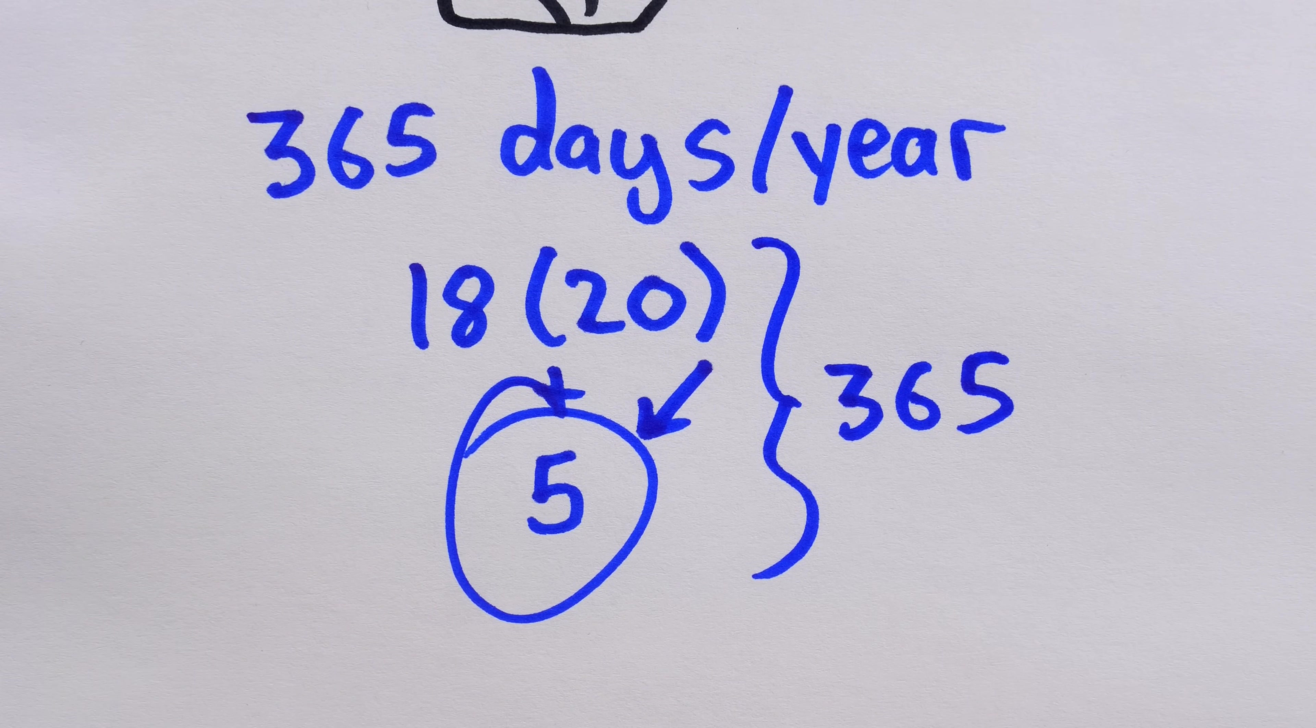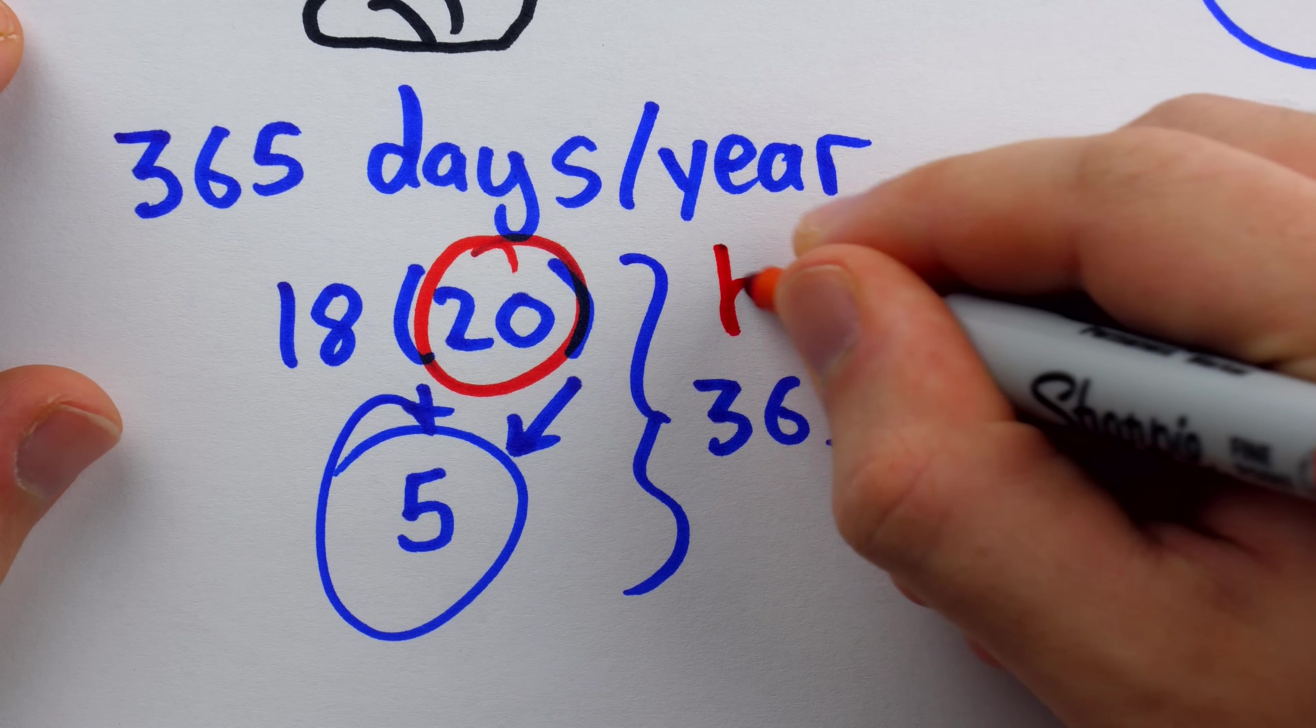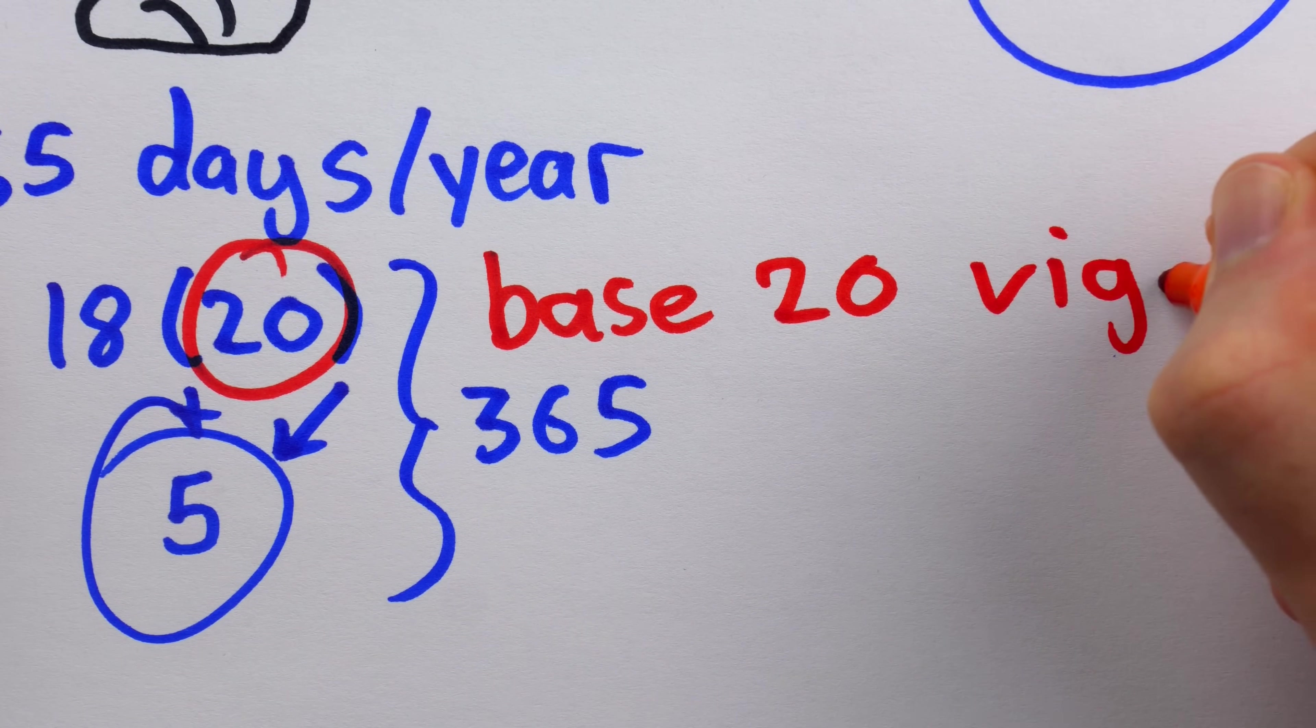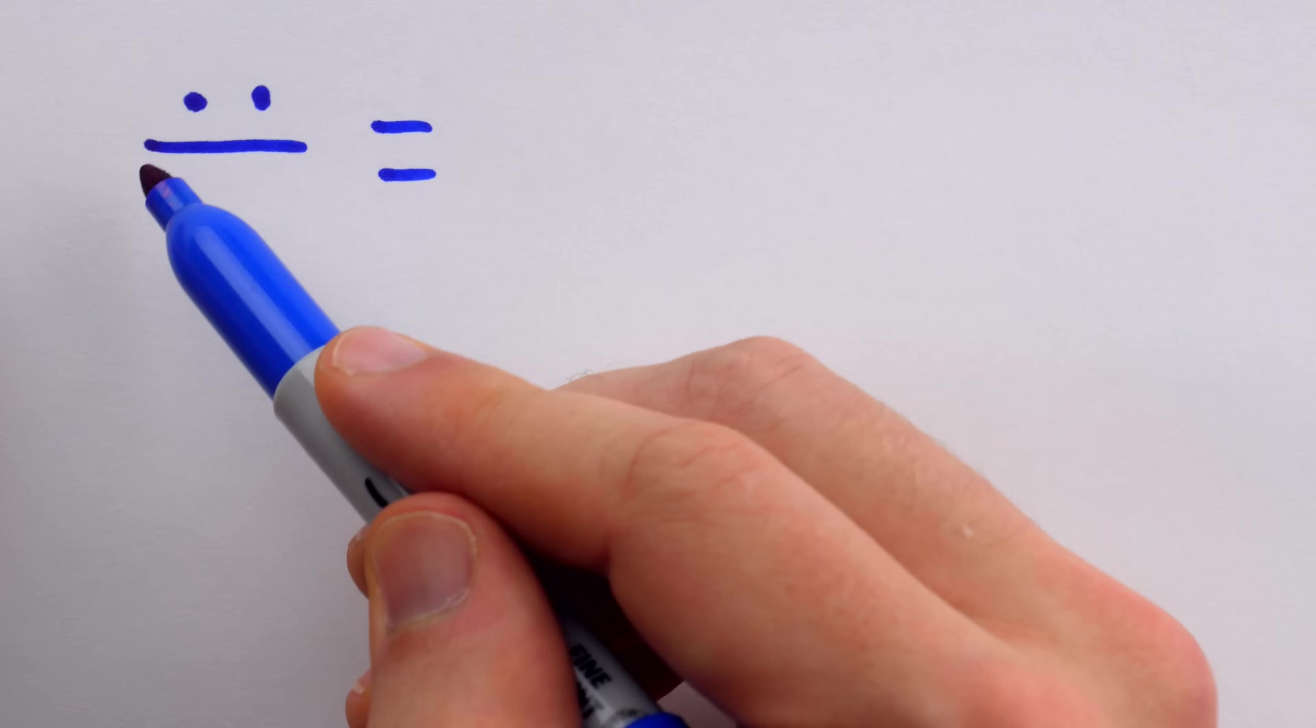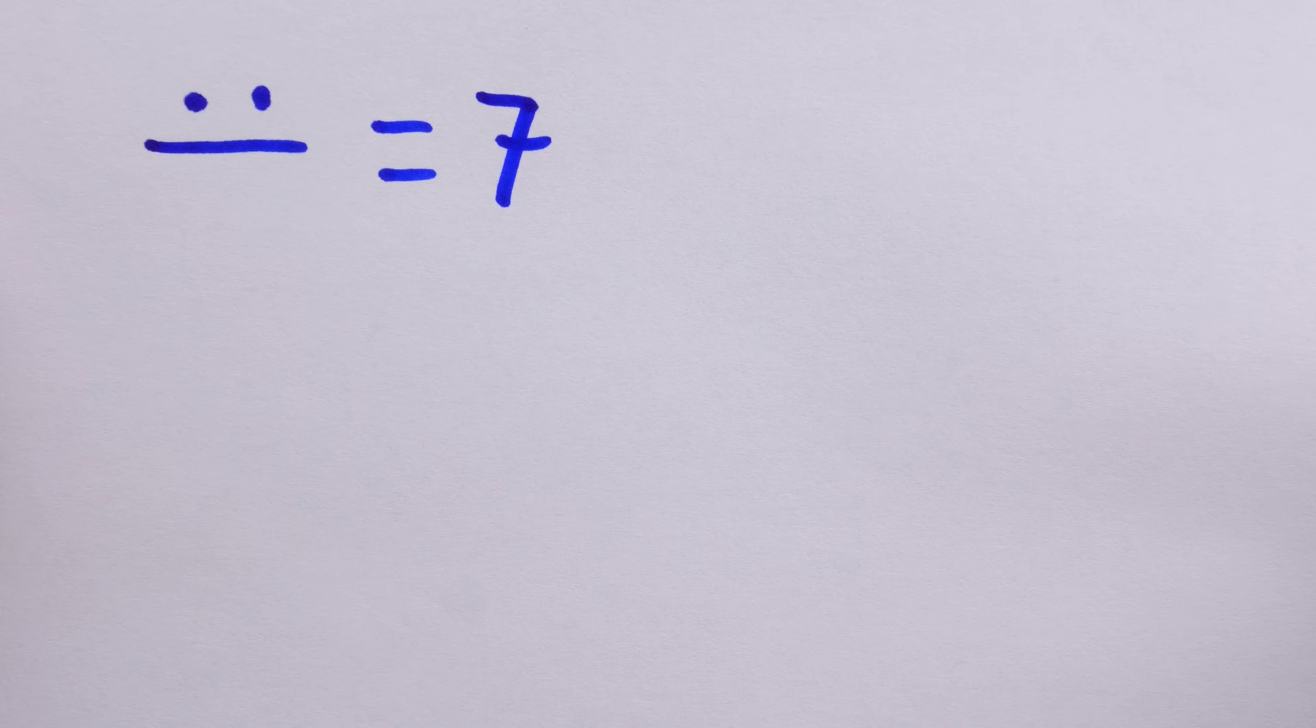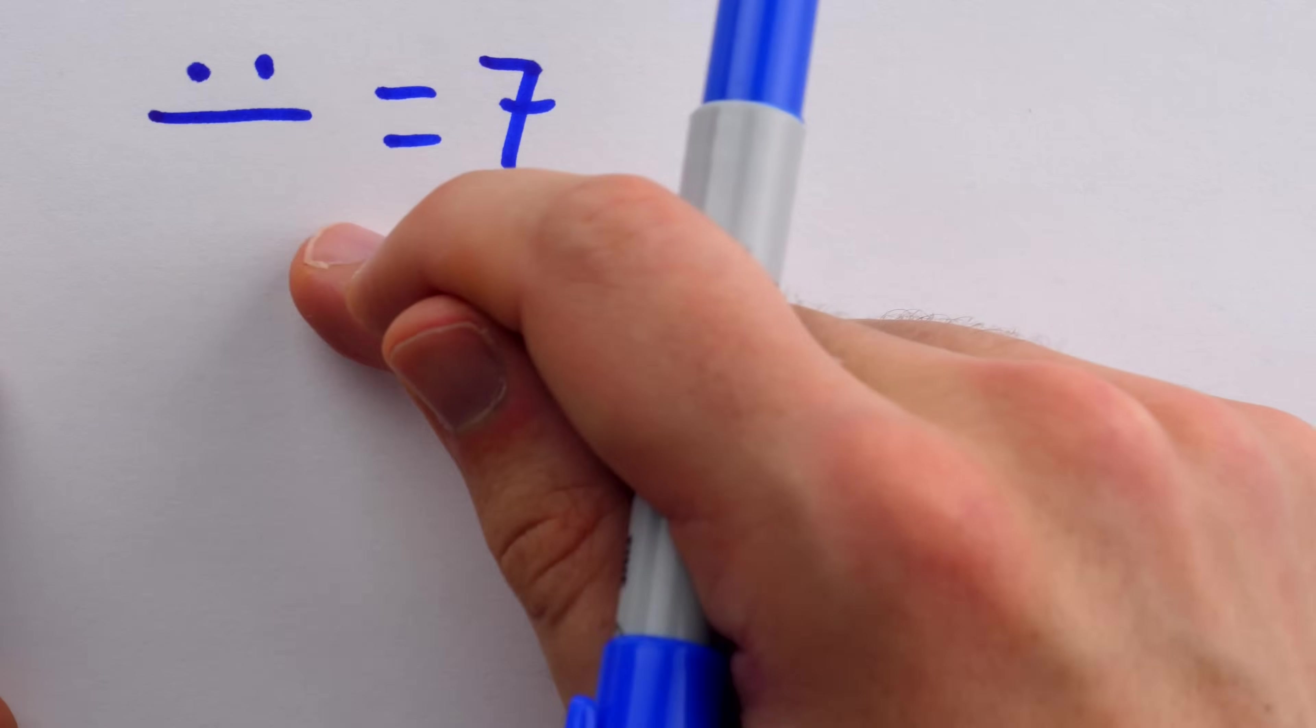But since the months were all 20 days long, they ended up using a base 20 number system. Just like our system is base 10 and called a decimal, a base 20 system would be called a vigesimal. So that's a cute name. But in the case of the Mayan number system, it doesn't quite tell the full story. Let's try writing some numbers. Here's a Mayan number. What do you suppose the value of this number is? We've got a bar with two dots above it. Since the bars represent 5s and the dots represent 1s, no surprise, this is equal to 7.